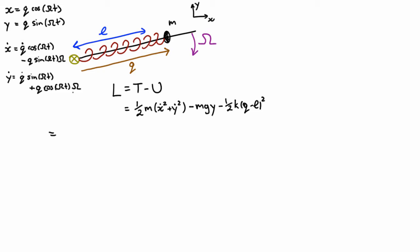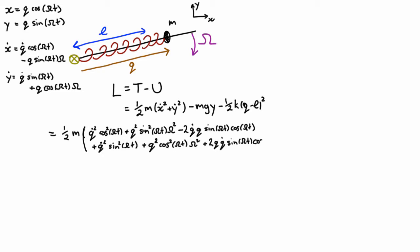Okay, and now we simply substitute in. And of course, this term cancels with that term, and we do have cos squared plus sine squared, and sine squared plus cos squared, so we can simplify.